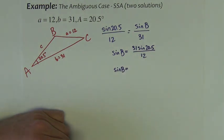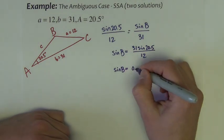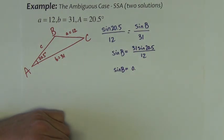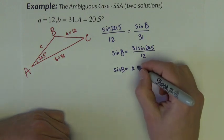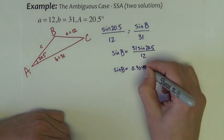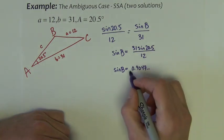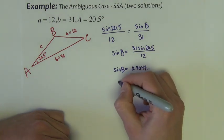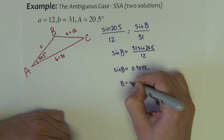So let's see, 31 sine of 20.5 divided by 12 is 0.9047. That's less than 1. So certainly we can find the inverse sine of that.